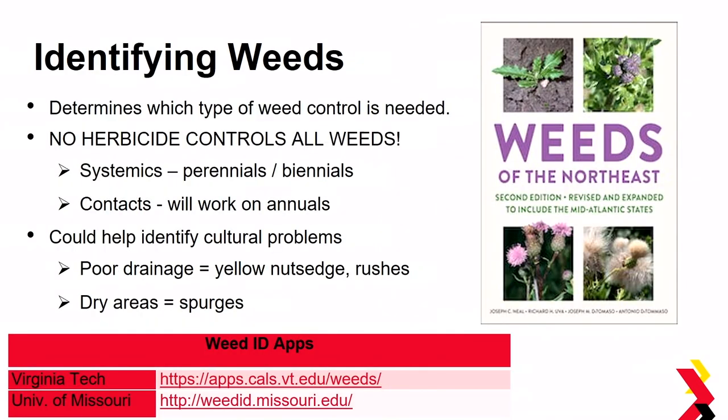The first thing about controlling weeds is really learning how to identify weeds — it's going to determine what type of control is needed. If you're spraying, remember, no herbicide controls all weeds. You've got systemic herbicides that work more with your perennial and biennial weeds, and contact herbicides that work more on your annual weeds. Being able to identify weeds can also help identify cultural problems, such as poor drainage in your field might mean increased yellow nutsedge pressure.